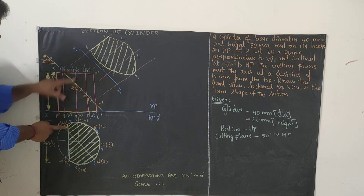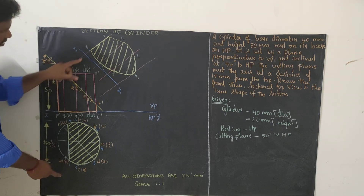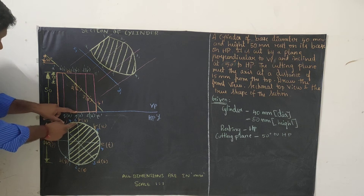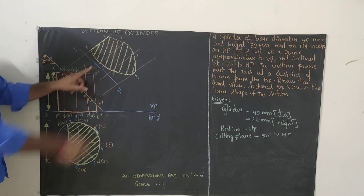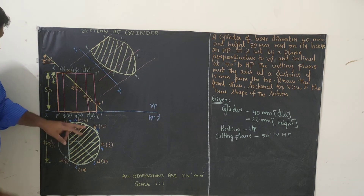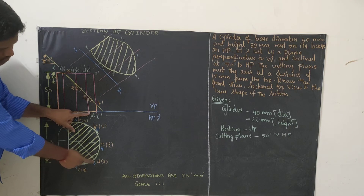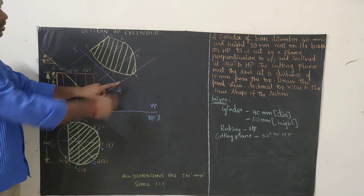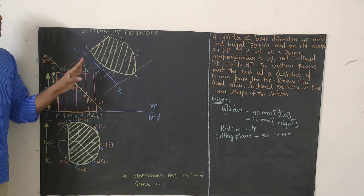To get the true shape, use a compass: measure the distance from the reference axis to point 7 in the top view and cut an arc from the corresponding perpendicular on the new reference line. Do the same for all points — measure from the axis to 1, 2, 3, 4, 5, 6, 7 in the top view and mark points 1', 2', 3', 4', 5', 6', 7'. Connect all points to get the true shape of the section.